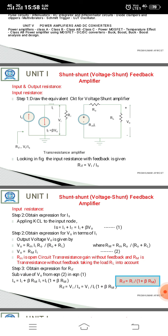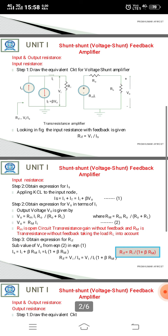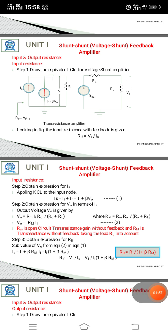Step 3: Obtain expression for V_naught in terms of ia. The output voltage V_naught is given as V_naught equal to RM times ia times R_naught divided by R_naught plus RL. Here, RM represents the open circuit trans-resistance without feedback, and RM is the trans-resistance without feedback taking the load RL into account.